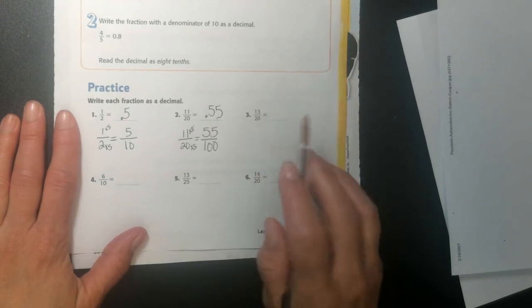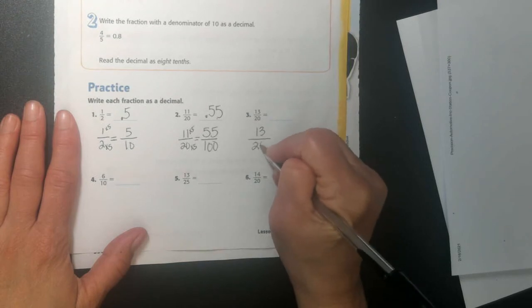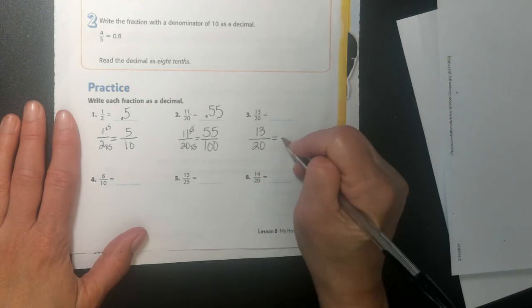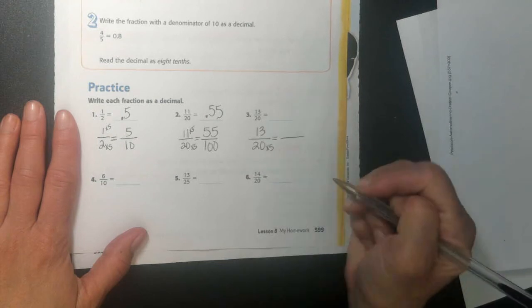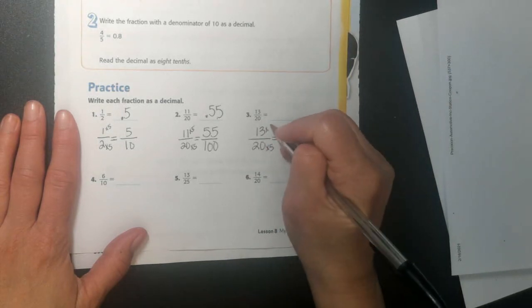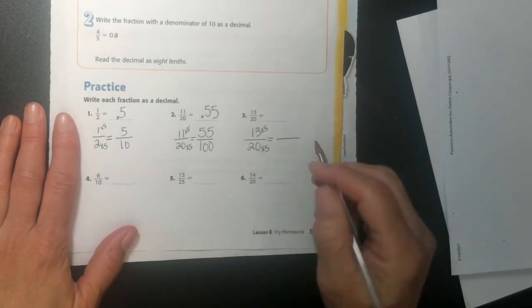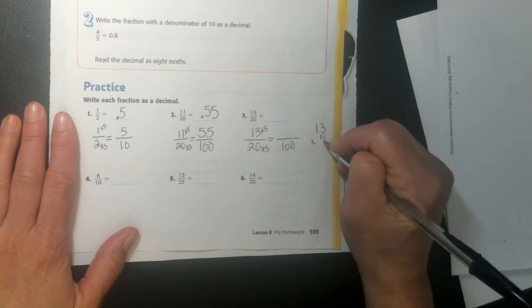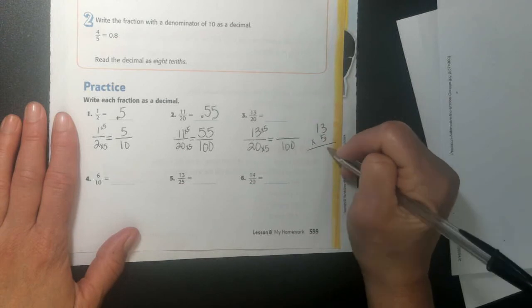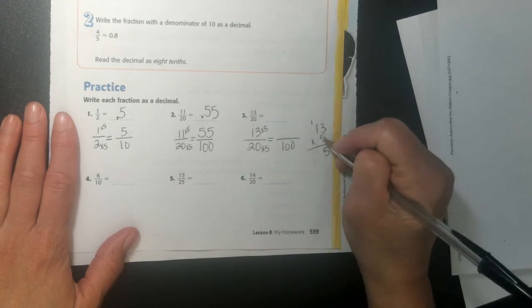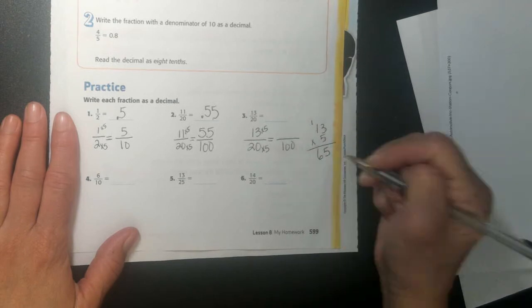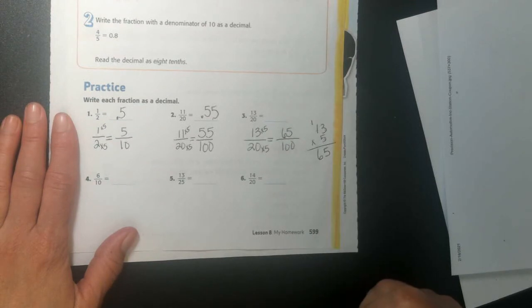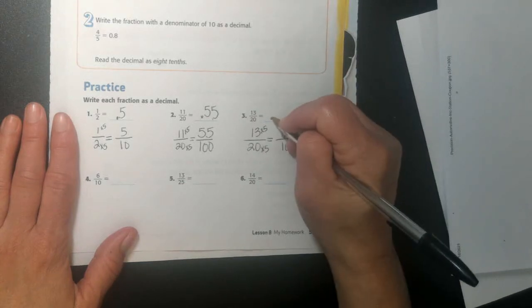So I'm going to take 13 over 20. I'm going to change my 20 into 100. So I'm going to take times 5. If I multiply the bottom times 5, I have to multiply the top times 5. So 20 times 5 is 100. 13 times 5 might be a little harder, but you can just break it down. When I write it like this, it helps me. 3 times 5 is 15, carry my 1. 5 times 1 is 5, plus 1 is 6. So now I have 65 over 100.